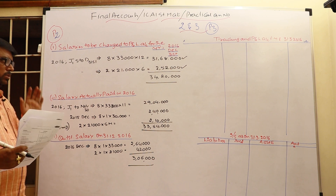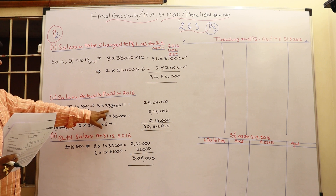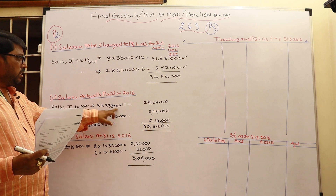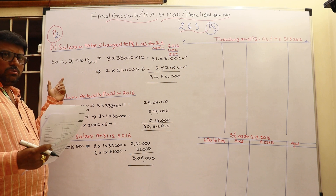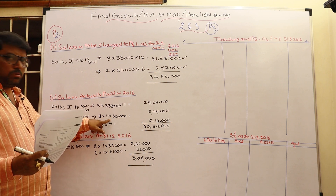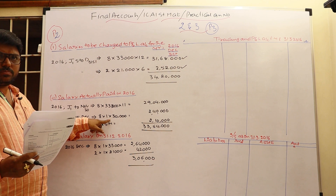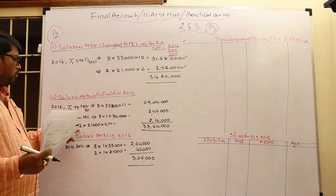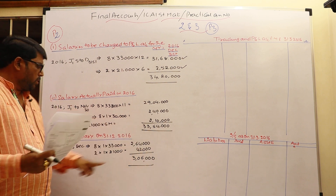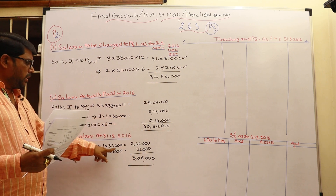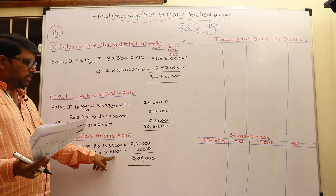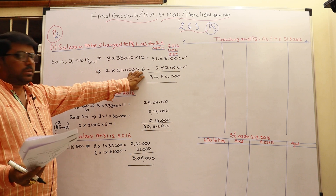For amount paid: 8 employees × 11 months × ₹33,000. But also, these employees received their December 2015 salary in January 2016 — 8 × 1 × ₹30,000 = ₹2,40,000. Two trainees worked for 6 months but only five months were paid. Outstanding: 8 employees, one month at ₹33,000; two trainees, one month at ₹21,000 — December 2016 salary outstanding.